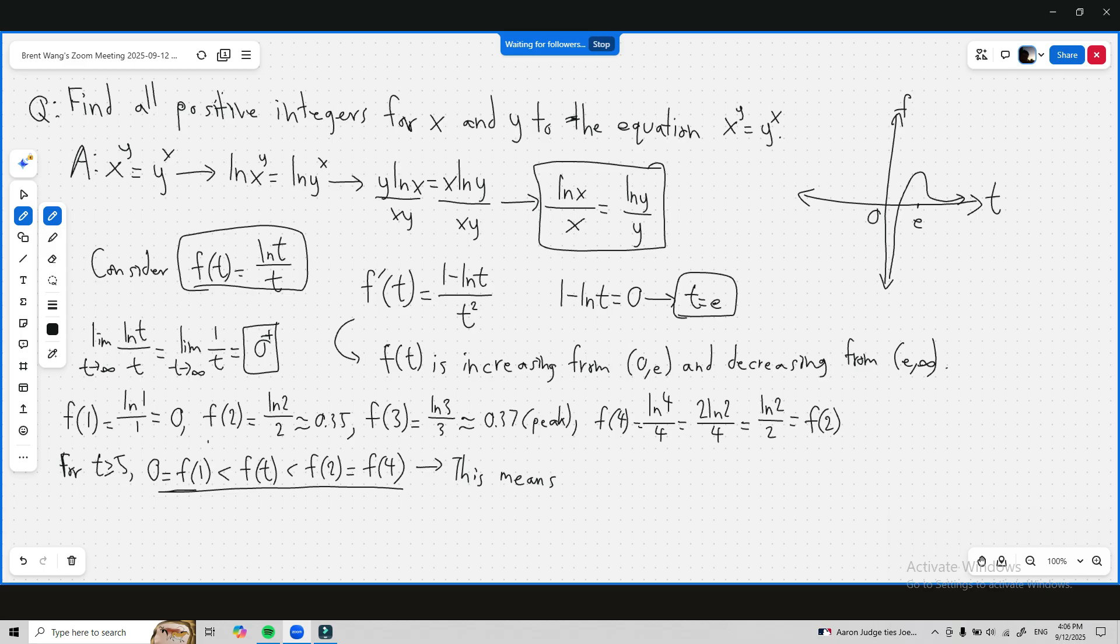This means to our original equation, this means if x can't equal y, the only other possible solution is x equals 2 and y equals 4, or x equals 4 and y equals 2.